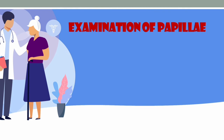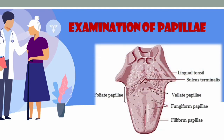Now we examine the papillae. There are three types: circumvallate papillae, which are large, 8 to 12 in number, located in front of the sulcus terminalis; fungiform papillae, found on the sides and near the tip of the tongue; and filiform papillae, which are very small, most numerous, and do not carry taste sensation. The sulcus terminalis is significant as it differentiates the anterior two-thirds from the posterior one-third of the tongue.